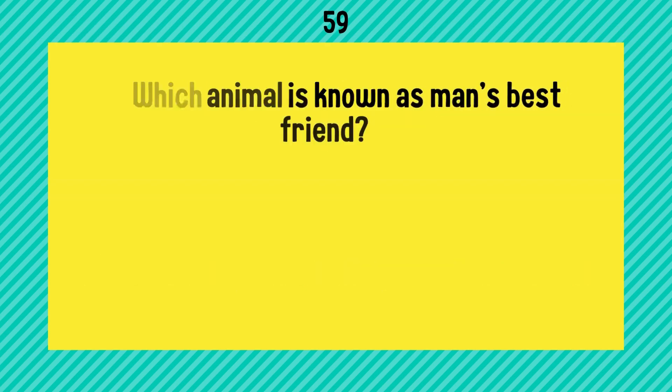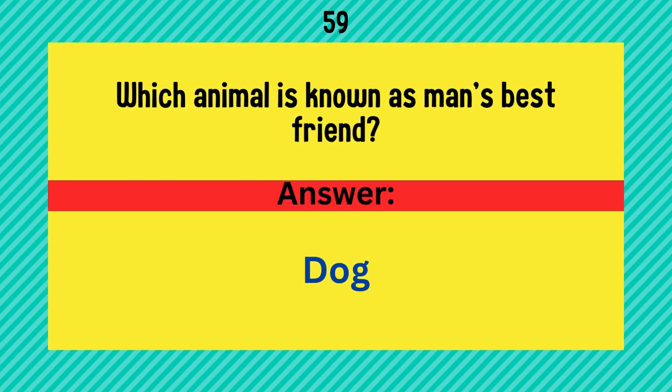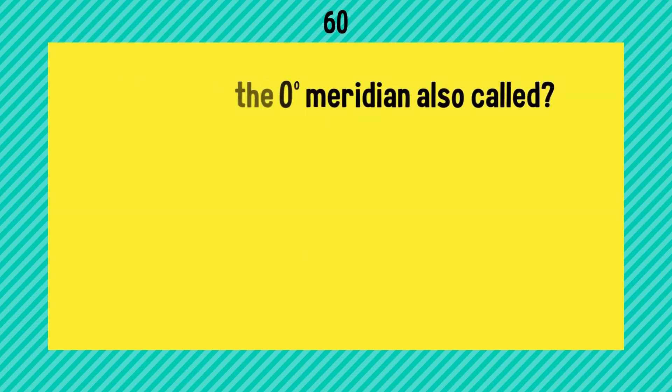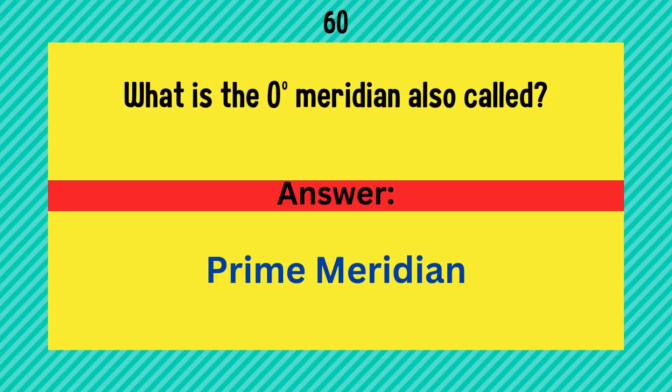Which animal is known as man's best friend? The answer is a dog. What is the zero degree meridian also called? Answer is prime meridian.